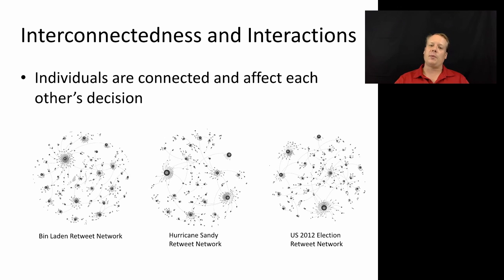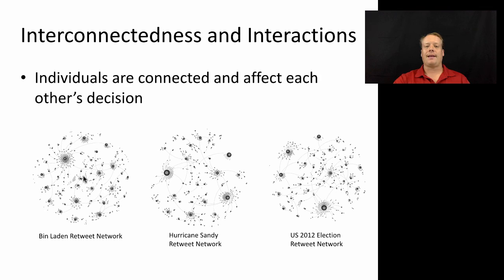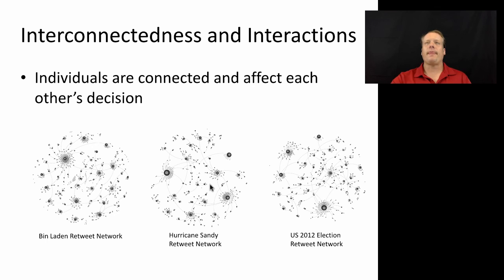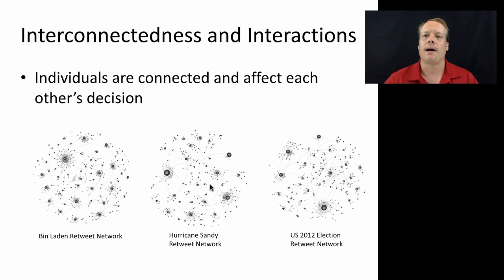Interconnectedness and interactions are an important part of what agent-based modeling tries to understand. Looking at Twitter retweet networks — for the Osama bin Laden capture and death, for Hurricane Sandy, and for the U.S. 2012 presidential election — by understanding interconnectedness between individuals and how they found out about these events on Twitter, we can better understand the diffusion of information through the network. I've now laid out a couple of key terms, and from this we'll go on to explore what those concepts mean in terms of when and why you might want to use agent-based modeling.